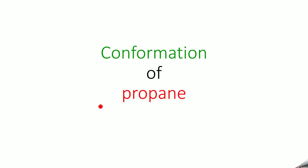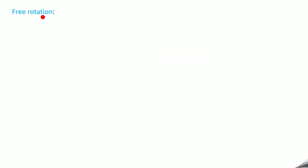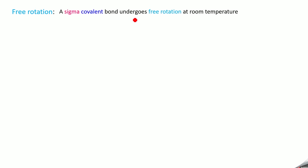In the last video we discussed the conformation of ethane. In this video we will do the conformation of propane. Free rotation is very important in conformational isomerism — a sigma covalent bond undergoes free rotation at room temperature. For example, you have a single bond between carbon and carbon and this undergoes free rotation.